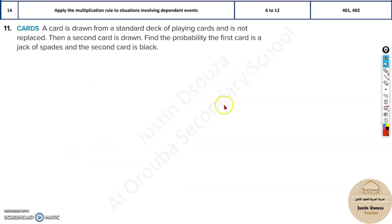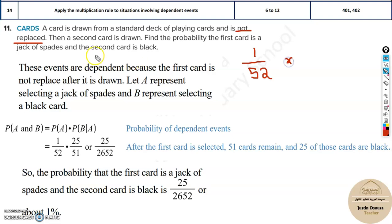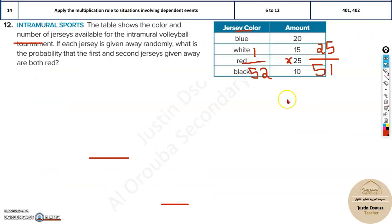For a playing deck of cards, first you pick the jack of spades — there is only one jack of spades in 52 cards. It is not replaced, meaning you don't put the card back. The next card drawn must be black. There are normally 26 black cards, but the jack of spades — also black — was removed, so it's 25 out of 51. Multiply the two probabilities to get the answer: approximately 1% chance.